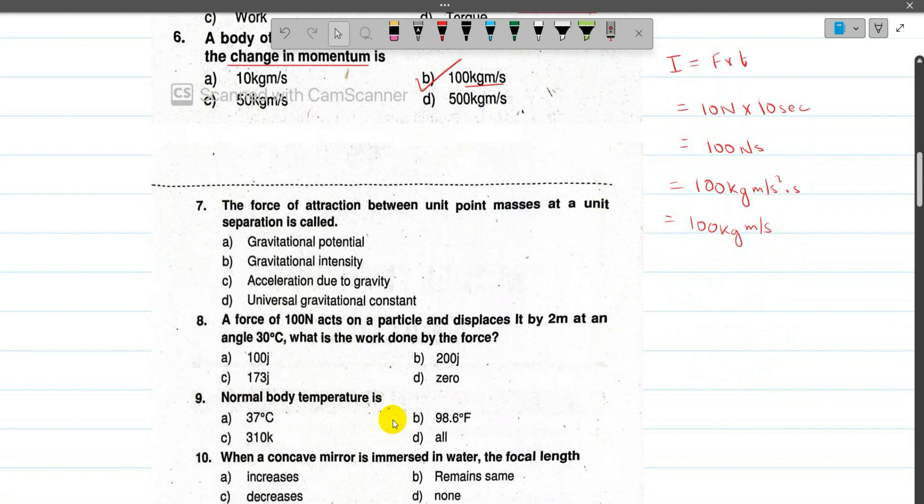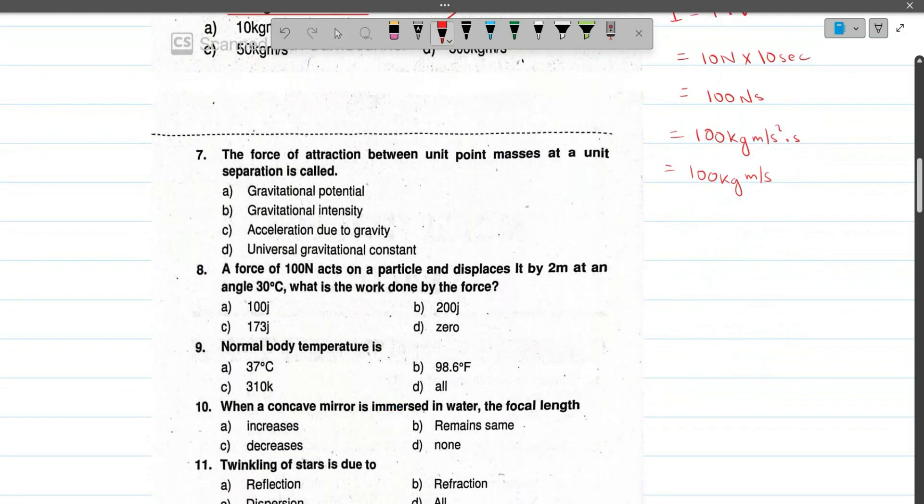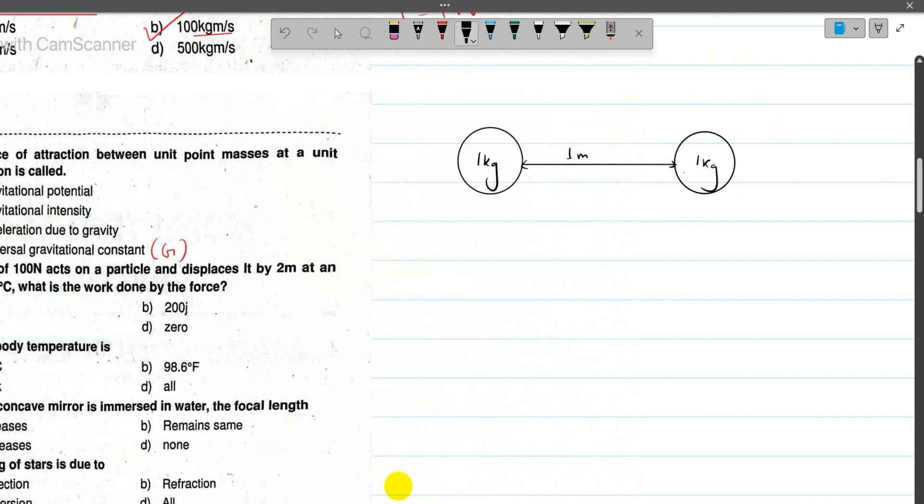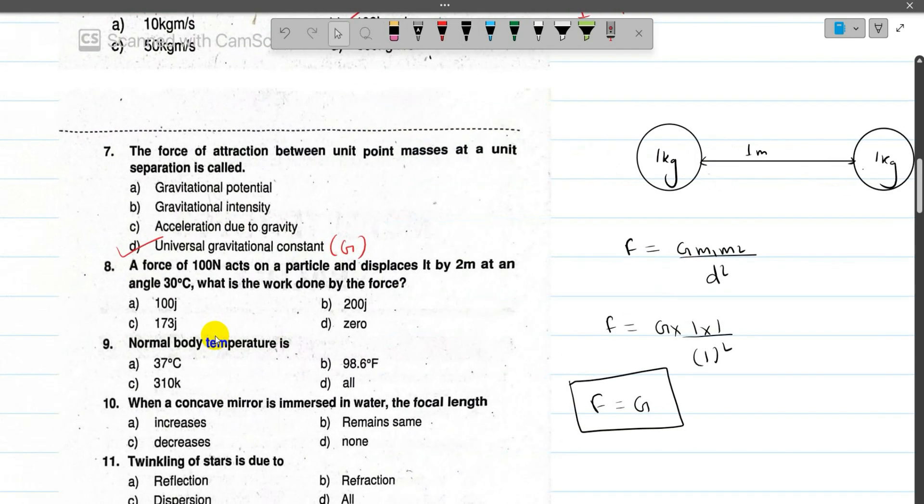Number 6: the body of mass 10 kg is acted on by force of 10 N for 10 seconds. The change in momentum is impulse, so impulse equals force into time. Now number 7: the force of attraction between unit point mass at unit separation is called the gravitational constant. The force of attraction is F equals G m1 m2 by d squared. If both masses are 1 and distance is 1, then force equals G. So the force of attraction equals universal gravitational constant.